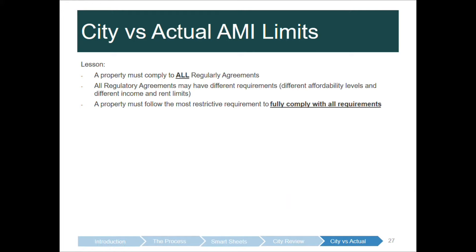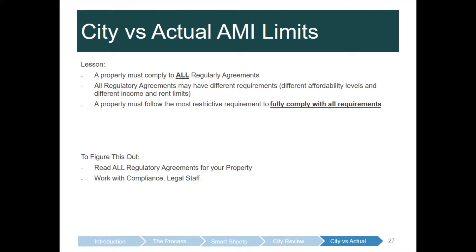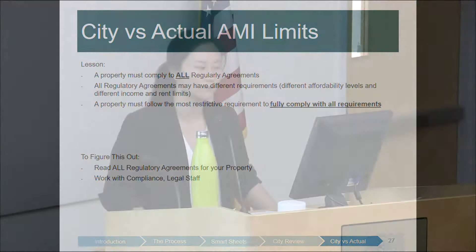The lessons here: a property must comply with all regulatory agreements. All regulatory agreements may have different requirements, different affordability levels, and different income and rent limits. A property must follow the most restrictive requirement — that's the only way it can fully comply with all requirements. Properties do have to follow and comply with all requirements; it's written down and it's legal. When in doubt, read all regulatory agreements for your property and work with your compliance, legal, and financial staff to figure out the financial section.